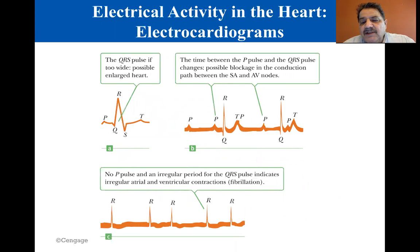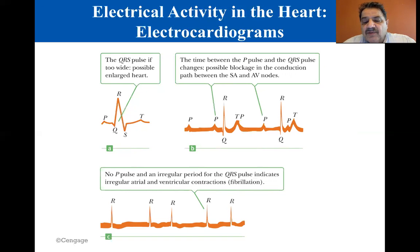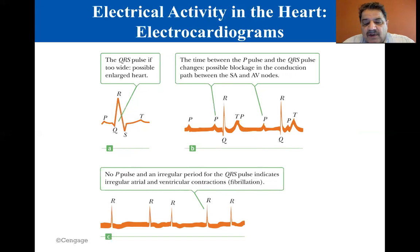Here you can see EKGs for an abnormal heart. The QRS portion of the pattern shown in the top left figure is wider than normal, which indicates that the patient may have an enlarged heart. The top right figure indicates that there is no constant relationship between the P pulse and the QRS pulse, suggesting a blockage in the electrical conduction path between the SA and AV nodes, resulting in the atria and ventricles beating independently and inefficient heart pumping. Finally, the bottom figure shows no P pulse and an irregular spacing between the QRS pulses, which is symptomatic of irregular atrial contraction called fibrillation, in which the atrial and ventricular contractions are irregular.